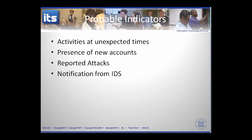Probable indicators of an attack include activity on the computer at unexpected times, the presence of new user accounts, reports of attacks in the media or within the organization, and notification from an intrusion detection system (IDS). A notification from an IDS is a probable indicator — it doesn't mean the attack has definitely occurred, but it does mean it is probable.